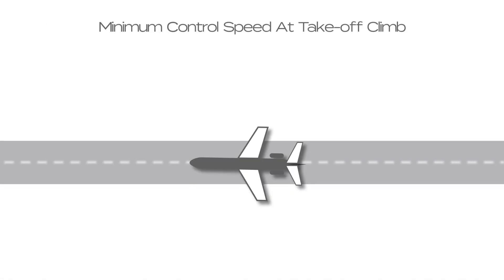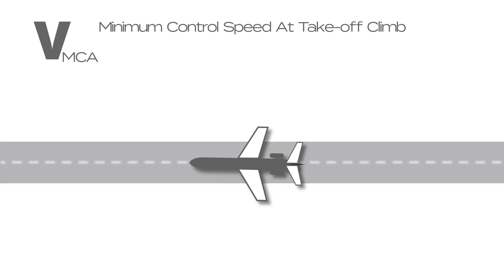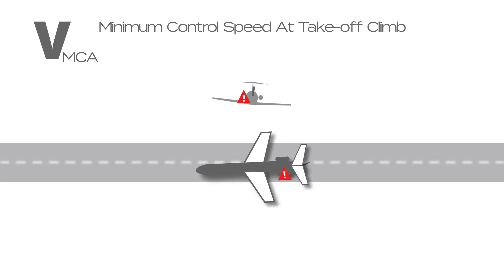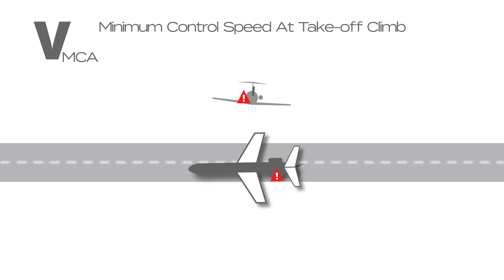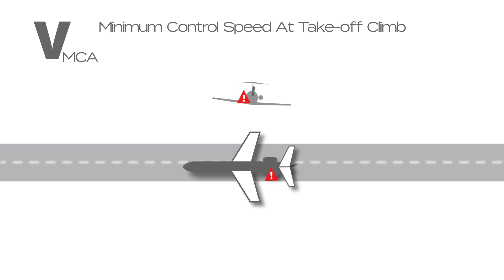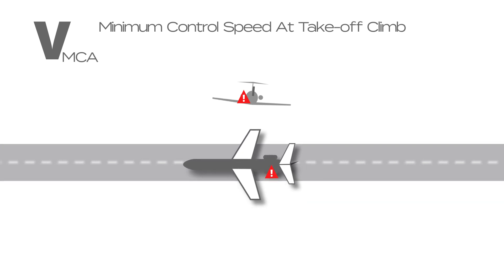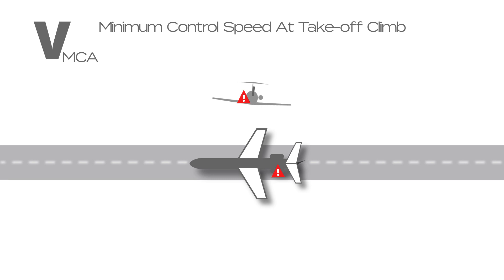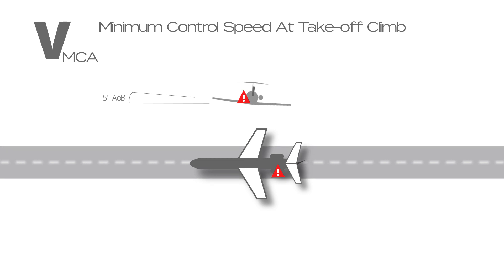Minimum control speed at takeoff climb is represented by VMCA. This is the minimum speed at which the aeroplane can be controlled with 5 degrees of bank angle in the event of critical engine failure and the other engine at takeoff power. This speed assumes a flaps takeoff setting is selected and the gear is retracted. The rudder is used to compensate for the yaw moment caused by thrust asymmetry, resulting in a side slip. To reduce the side slip, a slower speed can be selected if the aeroplane is banked to the side — the lower the speed, the greater the necessary bank angle. The speed that corresponds to a 5 degree bank angle is defined as VMCA.